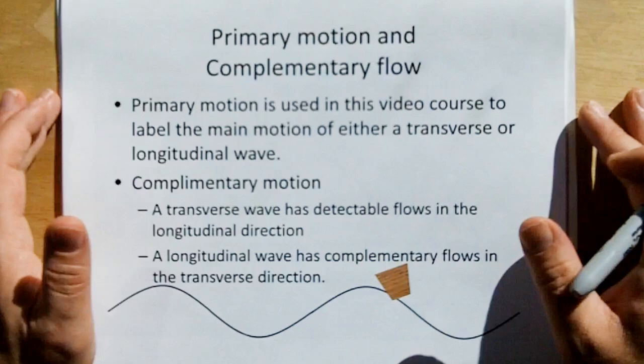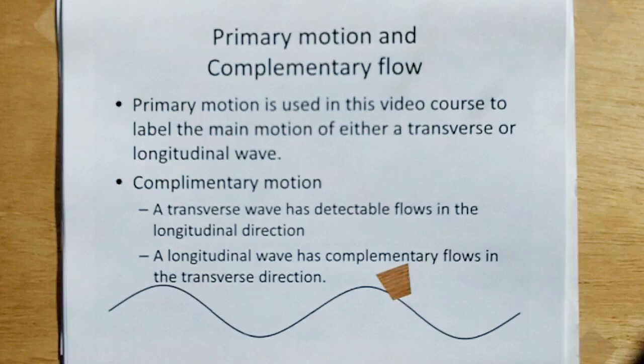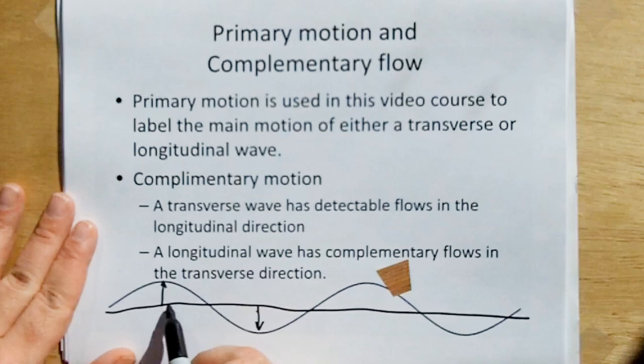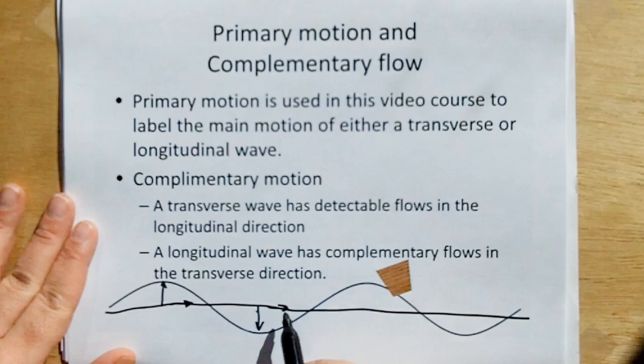So what are the primary motion and the complementary flow? The primary motion in this video course is to label the main motion of either a transverse or longitudinal wave. For example, if we have a transverse wave, the primary motion is transverse to the direction of motion. The complementary motion would be the one that complements that, a motion of the material that's complementary to the primary motion.